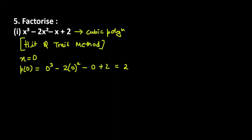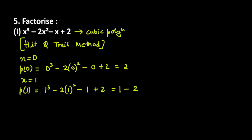Now let's try x = 1. So p(1) will be: 1 cube minus 2 times 1 square minus 1 plus 2. The first value is 1, second is 2, next is minus 1, last is 2. The 2s cancel, the 1s cancel, so the answer is 0. This means x = 1 is a factor.